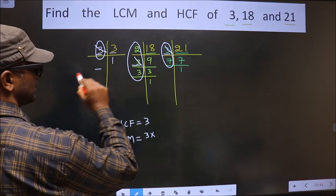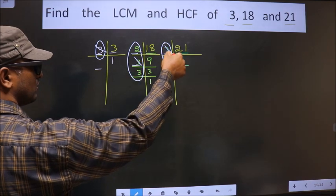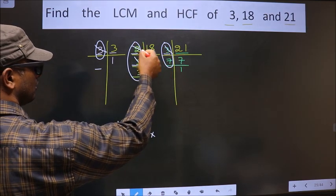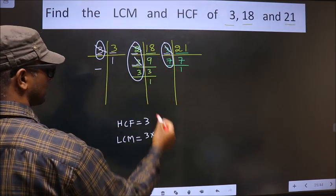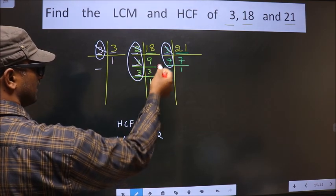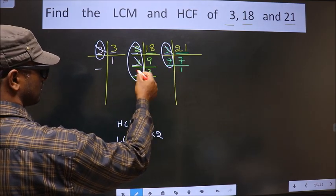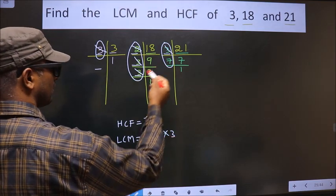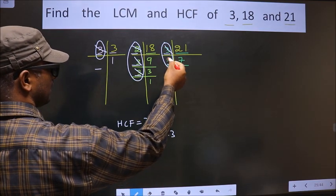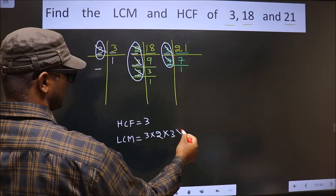Here this number is cut. Here 2 is not cut. Do we have 2 here? No. So you cut 2 right here. Now next number is 3. Do we have 3 here? No. So you cut 3 right here. Now here 7 is not cut. So you cut 7 right here.